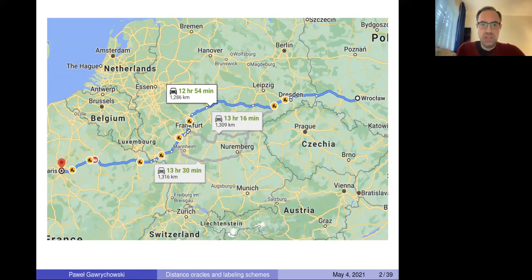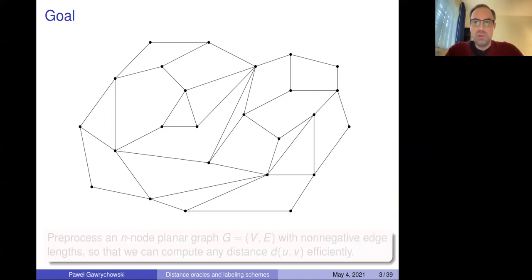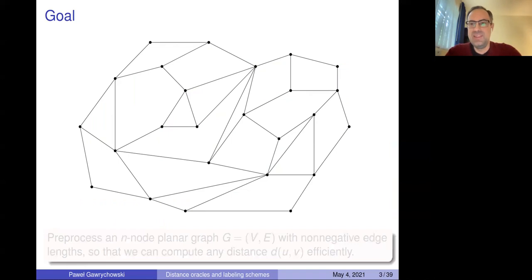This is the question, and it's motivated by real life applications, but what I'm going to show is not really going to be directly applicable to real life. I will consider an abstract version of this question where we have a graph. This question has been studied for general graphs, but there's not so much you can do for exact queries for general graphs. You can allow some approximation but I want exact queries — I really want the shortest route.